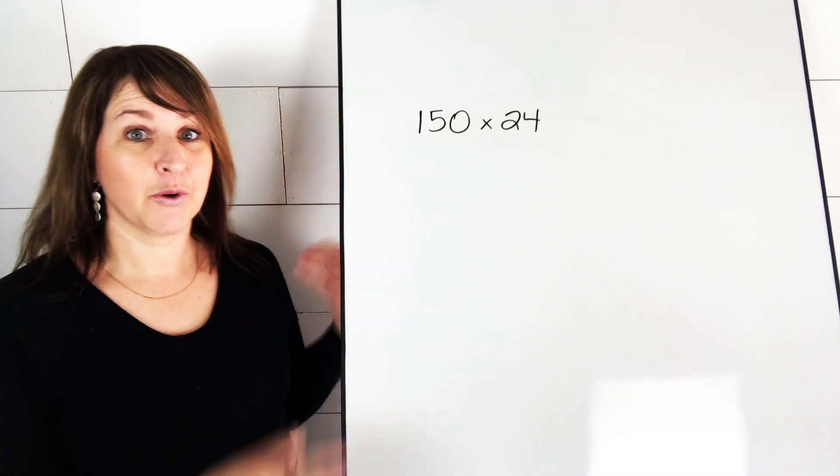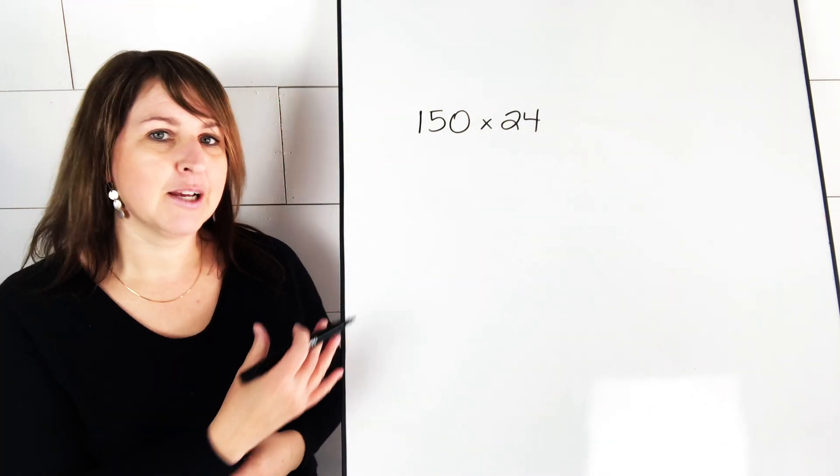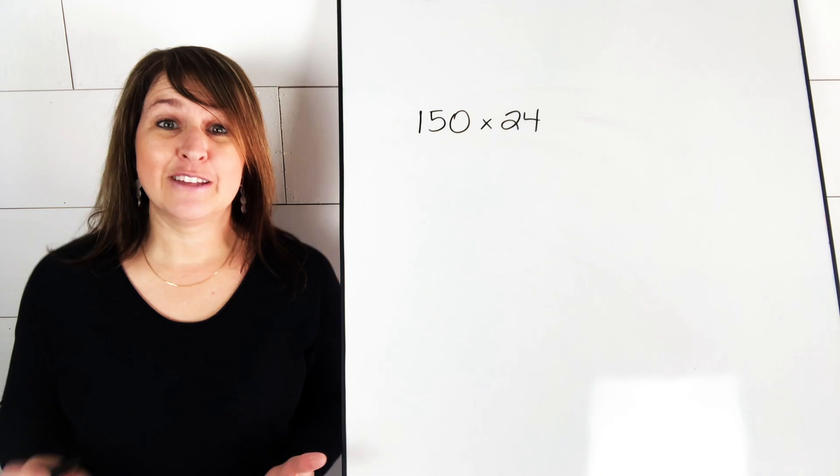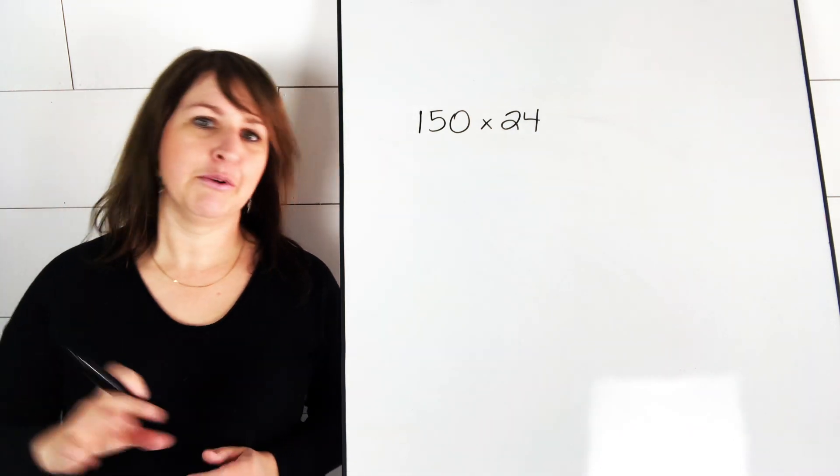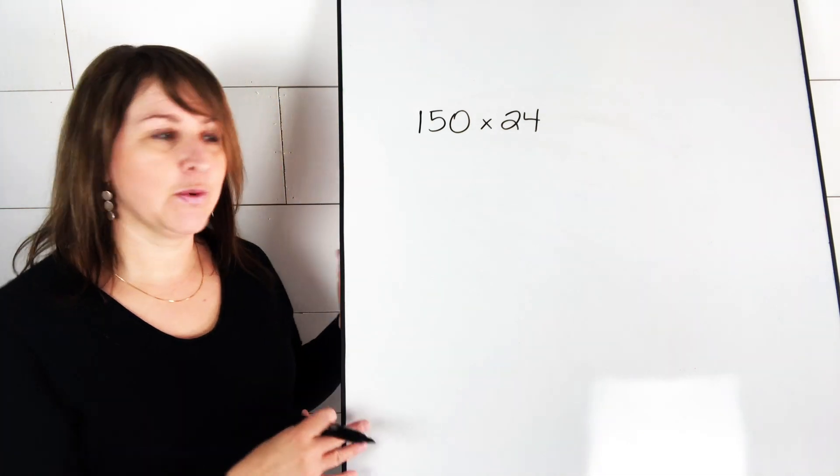All right, let's try another one. We're going to make it harder this time. So if you see a question like 150 times 24, you might think it's way too hard to solve without lining it all up and doing long multiplication. But actually, we can use doubling and halving for this question as well.